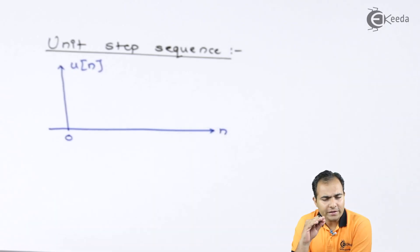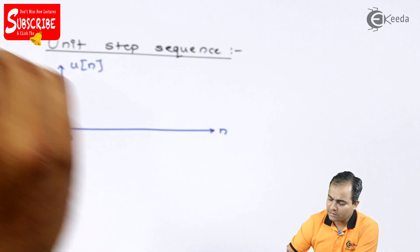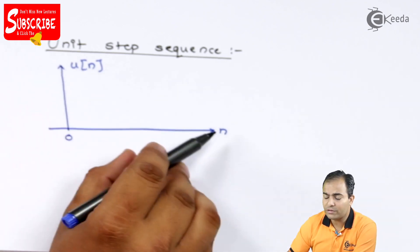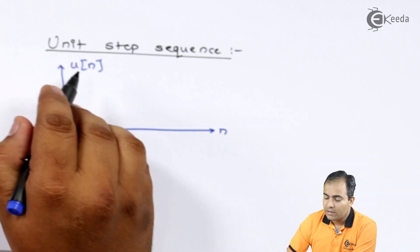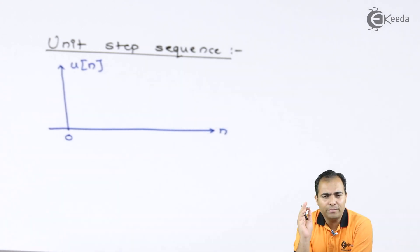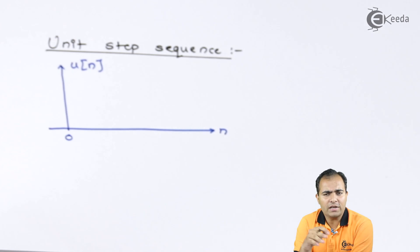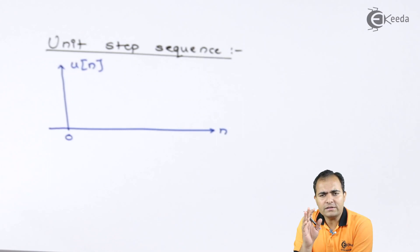An important difference between continuous time and discrete time is that continuous time is represented in terms of T, whereas discrete time is represented in terms of small n. This discrete sequence is always present in sampled form, meaning there is no continuity in the graph. The graph is only available at particular instants of time, and between any two instants the amplitude is always 0.